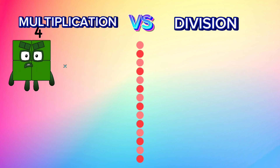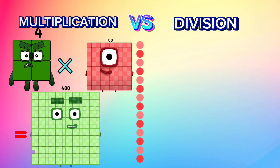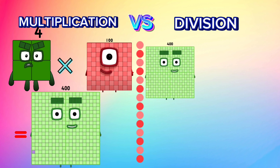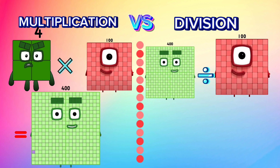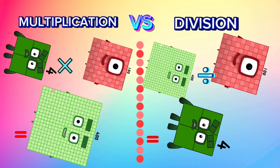4 multiplied by 100 is equal to 400. Let's compare it to division: 400 divided by 100 is equal to 4.